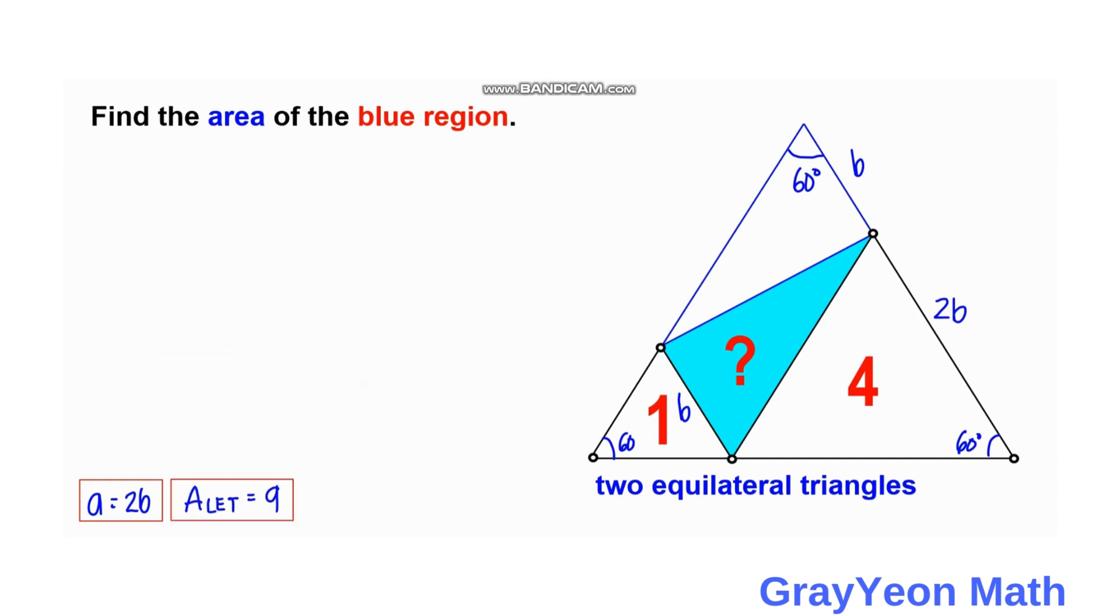Next, notice that this blue region is actually half of the area. This is parallel with this side. So we call this region as x and this as x also, because they are equal. Next, we got earlier that the area of this large triangle is 9 square units.